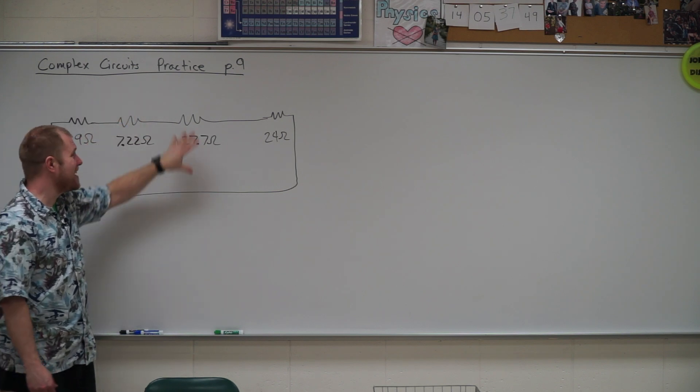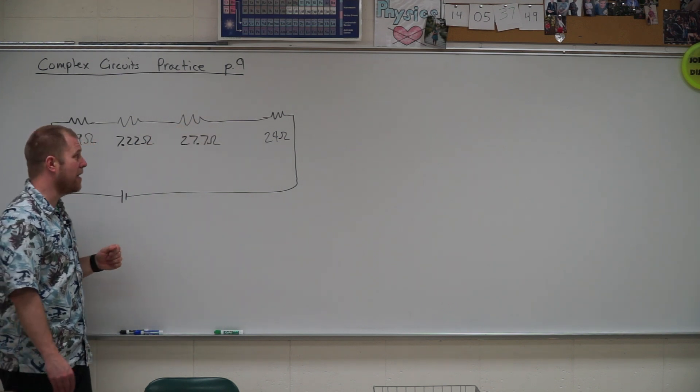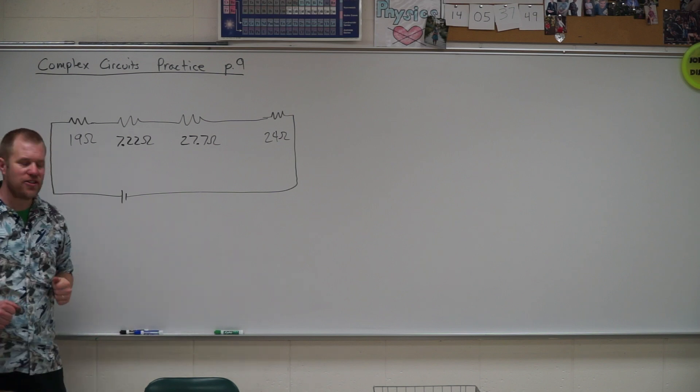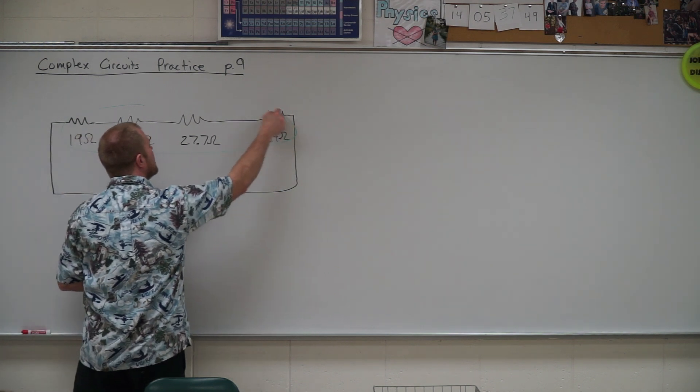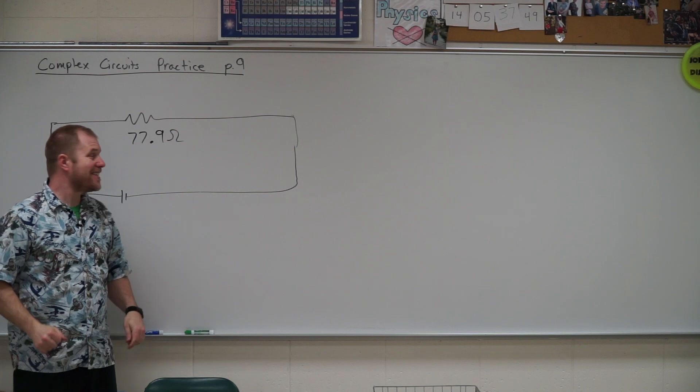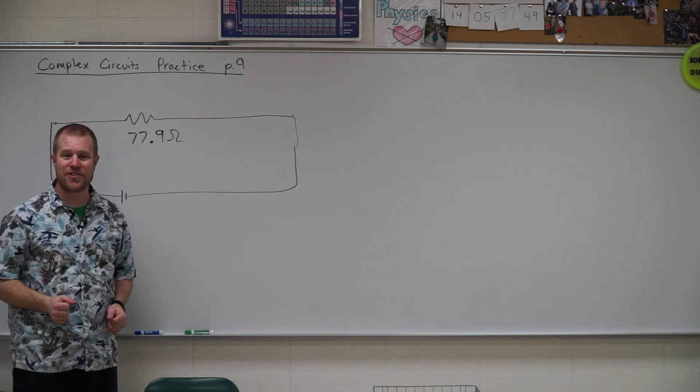And 27.7 ohms when you smooshed those two resistors in parallel. And the last step is series - you're correct. We're going to put all four of those together in series. A single 77.9 ohm equivalent resistance for that circuit.